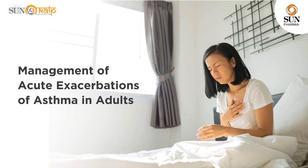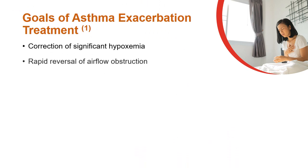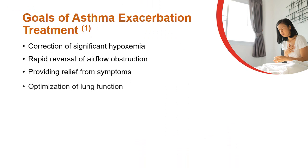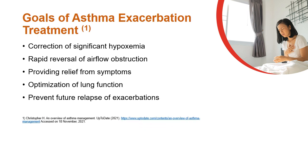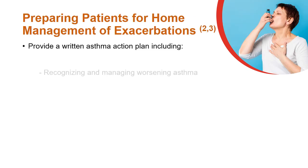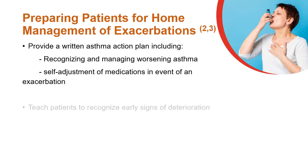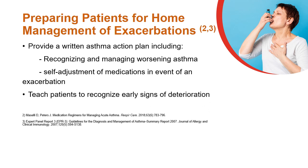Management of acute exacerbations of asthma in adults. The main goals of asthma exacerbation treatment are correction of significant hypoxemia, rapid reversal of airflow obstruction, providing relief from symptoms, optimization of lung function, and prevention of future relapse of exacerbations.